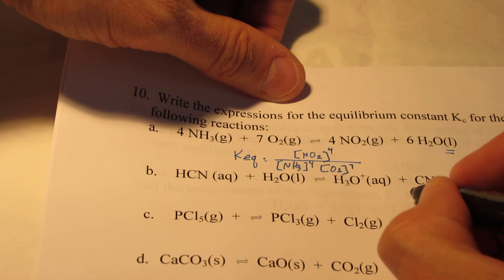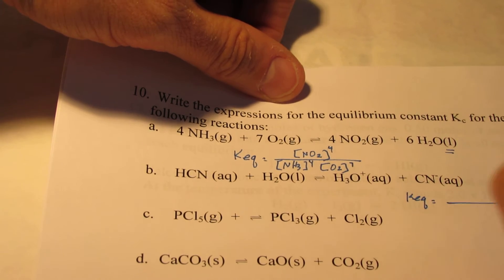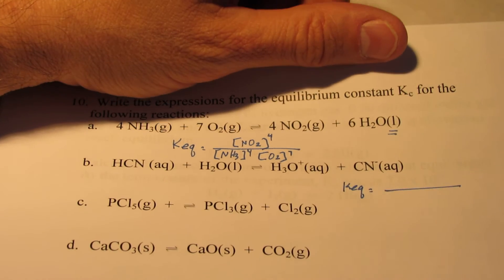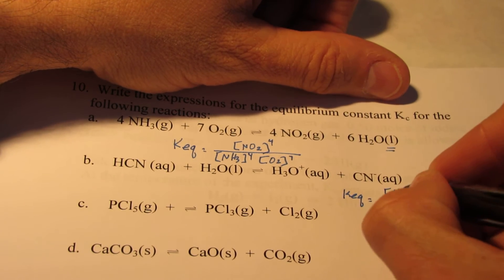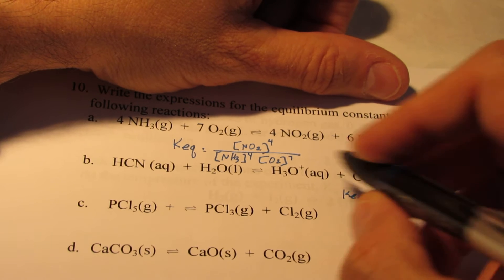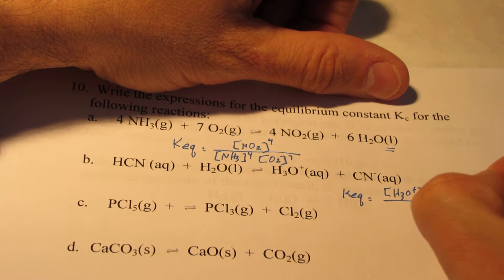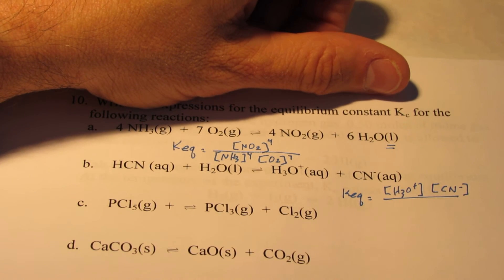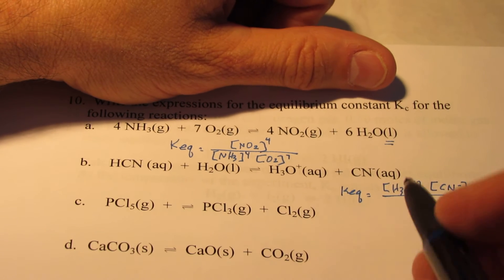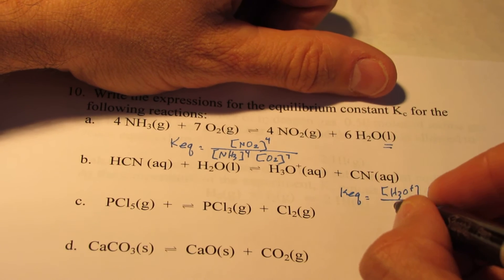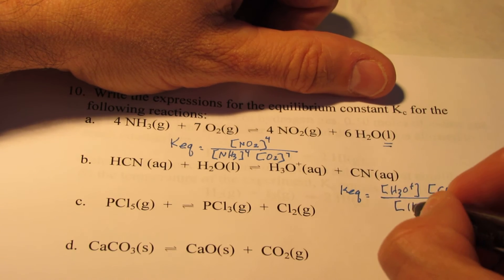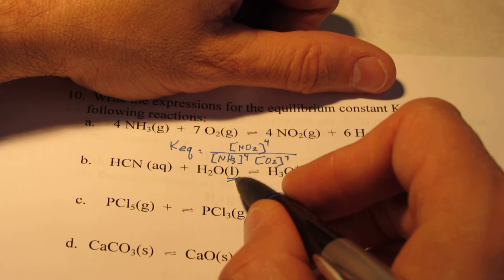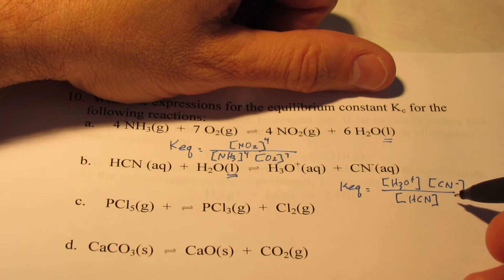For letter B, KEQ equals — remember we can include gases and things dissolved in water; liquids and solids we leave out. So I have H3O+ concentration to the first power and CN− to the first power — these are both dissolved in water and we can measure their concentration in moles per liter, which is what those brackets represent. On the reactant side, I have HCN concentration to the first power. And once again, I'm going to leave water out — it's a liquid, so it's not part of this expression.